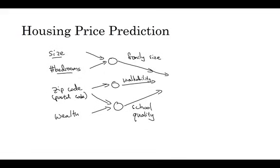And then finally, you might think that the way people decide how much they're willing to pay for a house is they look at the things that really matter to them. In this case, family size, walkability, and school quality. And that helps you predict the price. So in this example, X is all of these four inputs. And Y is the price you're trying to predict. And so by stacking together a few of the single neurons, or the simple predictors we had from the previous slide, we now have a slightly larger neural network.